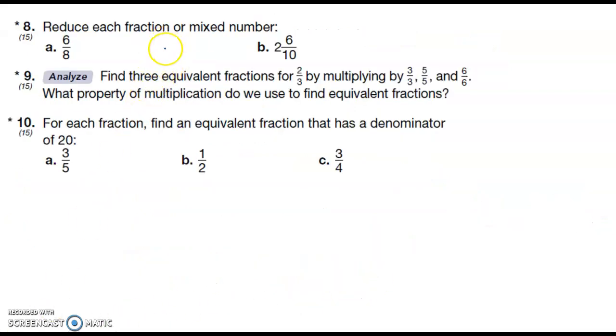Number eight says reduce each mixed fraction or mixed number. So a has 6/8 and I know that two goes into both six and eight, so I'm going to divide by two. I get 3/4 and that is as far as that's going to go. And then here the two is just going to kind of hang out for the whole process. Let me divide this by two. Six divided by two is three, ten divided by two is five, and that's as far as that's going to go.